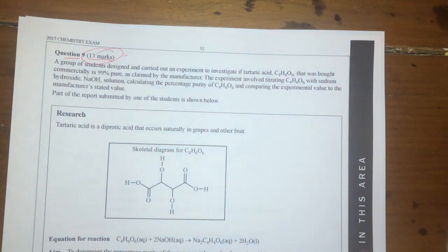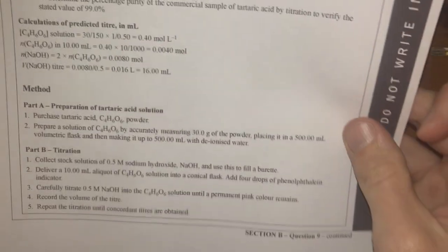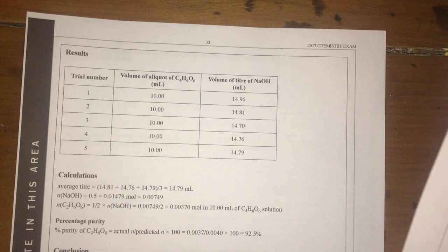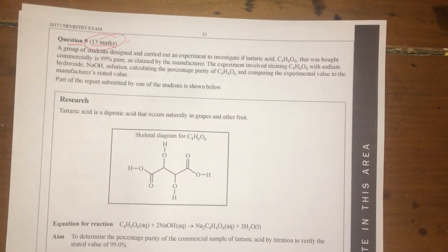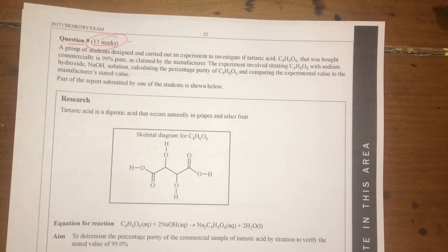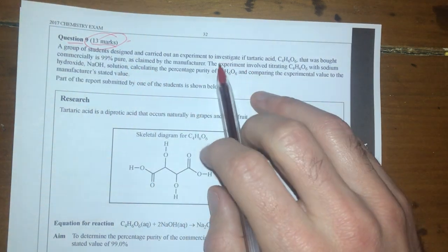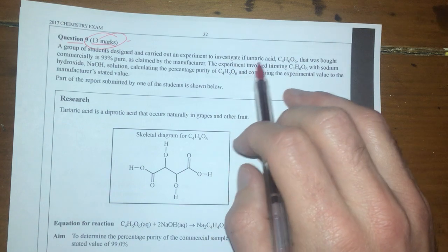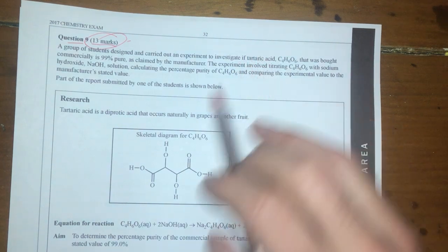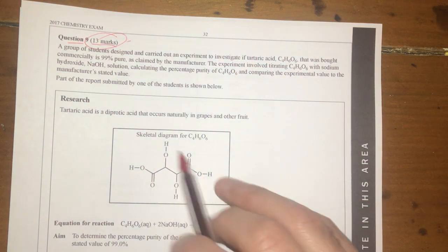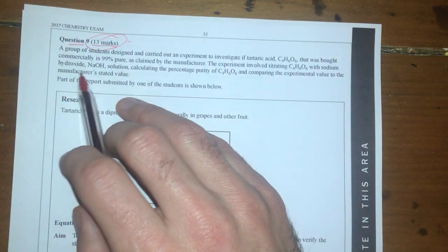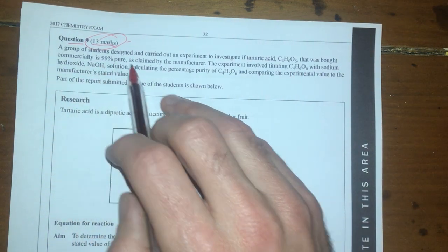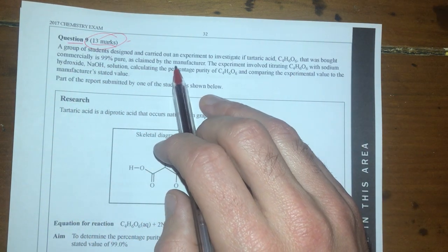It's an experimental question, so therefore looking at this, there is a massive amount of reading involved. This is a good one to have a quick look through on your reading time. But let's have a look at this. The investigation was to find out something about tartaric acid, which is here, that was bought commercially is 99% pure, as claimed by the manufacturer, so I want to find out if it's true.